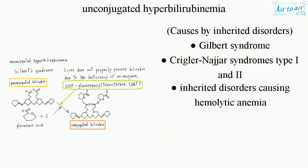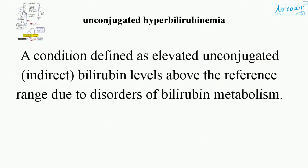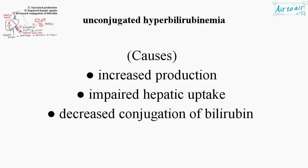Causes include inherited disorders such as Gilbert syndrome and Crigler-Najjar syndromes type I and II, as well as inherited disorders causing hemolytic anemia.